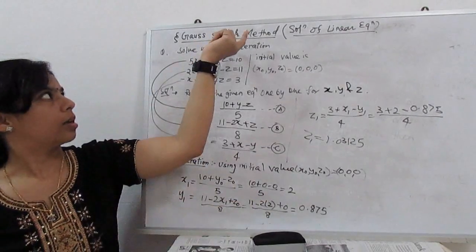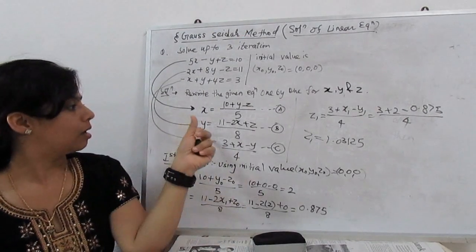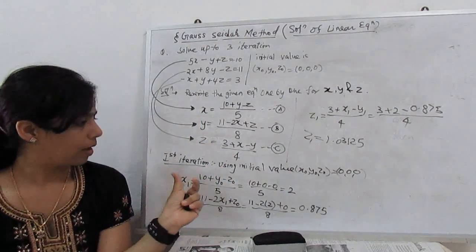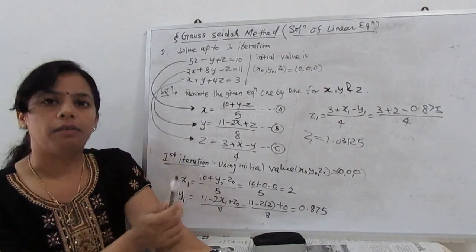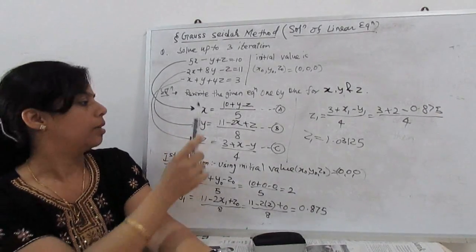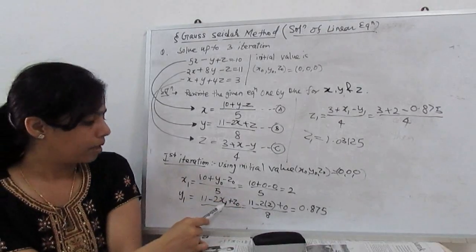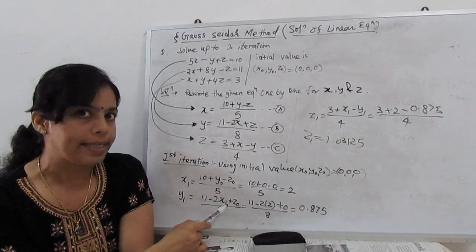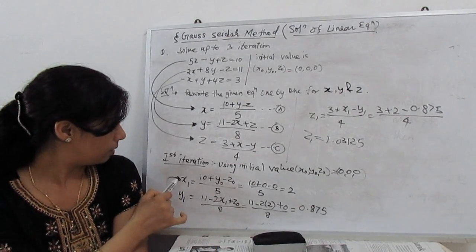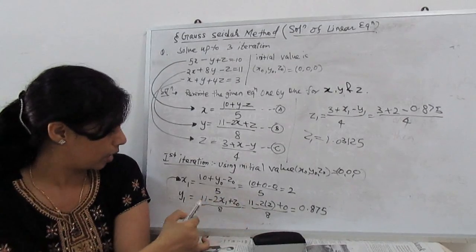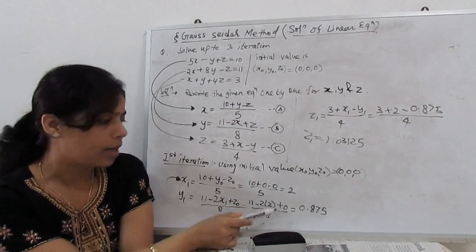Now, the Gauss-Seidel method starts. This is the difference when we calculate Y1. Now we have the value X1 is 2. For Y1, our iteration equation becomes (11 - 2X1 + Z0)/8. At the place of X0 in Jacobi method, we don't take X0 here because just previously we calculated X1, so we substitute this X1 here. So (11 - 2X1 + Z0)/8. Substitute the value and calculate.